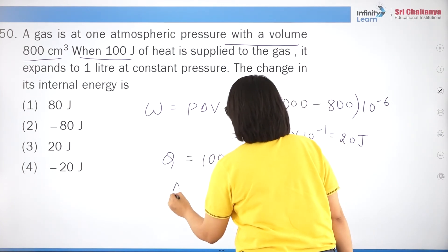Question 23: a lead bullet moving with velocity V hits a wall; 50% of kinetic energy converts into heat. So (1/2)×(1/2)MV² = MS·ΔT×J. Mass M cancels, giving V²/4 = S·J·ΔT. Therefore ΔT = V²/(4Sj), which is option 2.